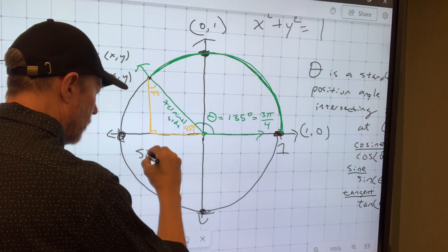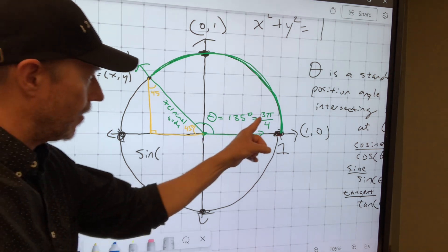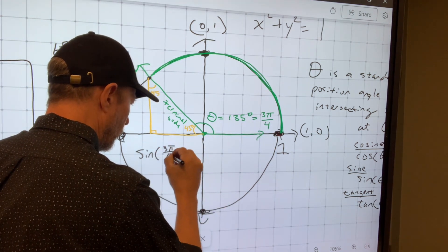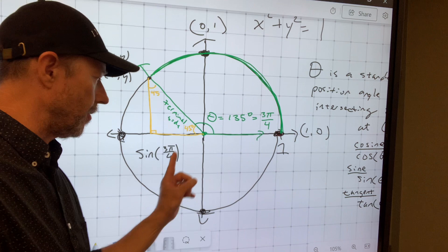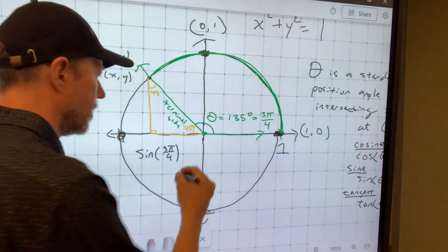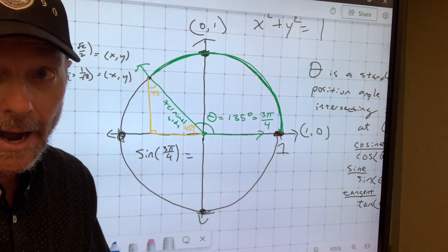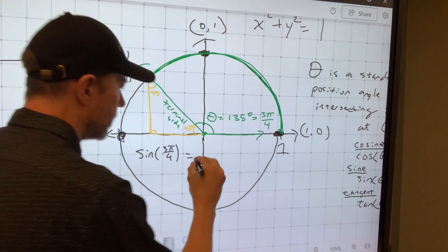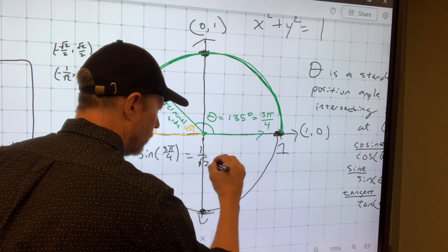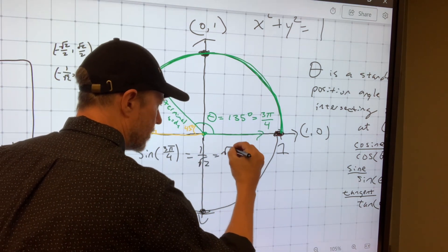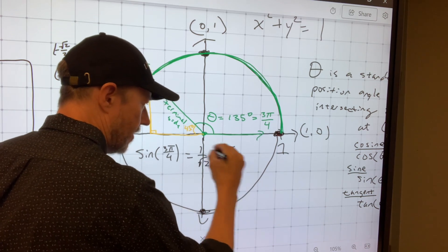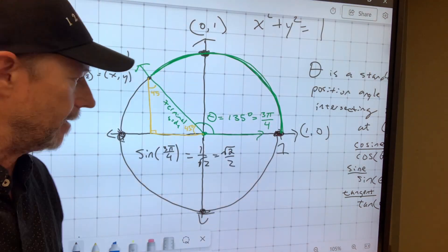If I want to evaluate sine at 3π/4 or at 135 degrees, you can put in degrees or radian measures, you get out the y-coordinate, and the y-coordinate is one over root two, or if you want to prefer it rationalized, root two over two. These are the same value. These are the same number. They're both approximately 0.7.